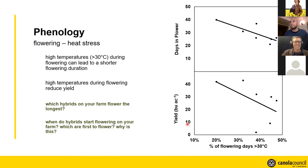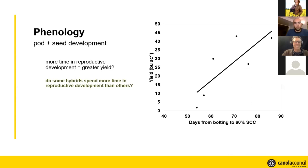Which hybrids on your farm flower the longest? I think this is an important data point to collect for hybrid comparison trials. Tracking when flowering starts — and actually most heat stress experiments consider flowering from bolting, so even before there are visible flowers, from bolting to end of flower. Which are the first ones to flower and why? Moving forward to pod and seed development, something I noticed was when days from bolting to 60% seed color change — the recommended timing for swathing — increased, so did yield. Do some hybrids spend more time in reproductive development than others? I'd encourage you to look at this on your farm.